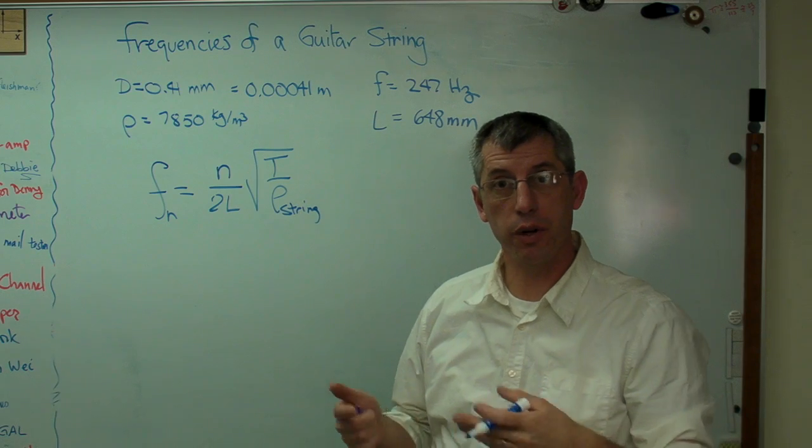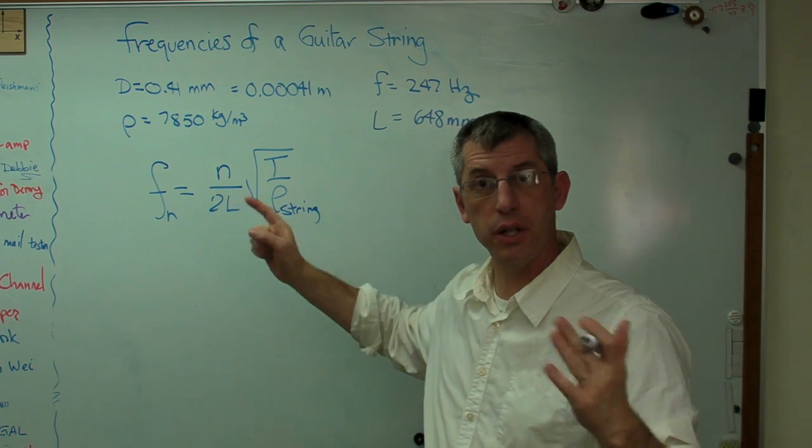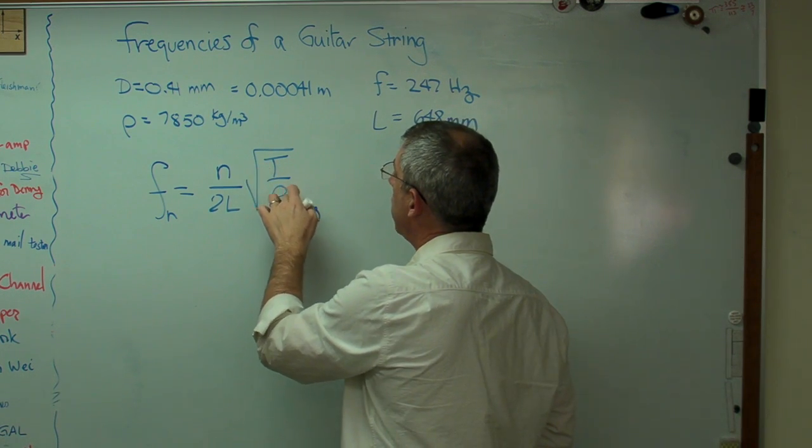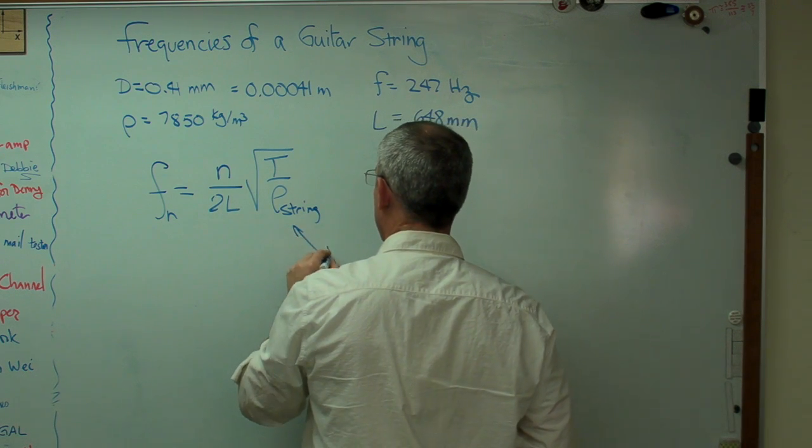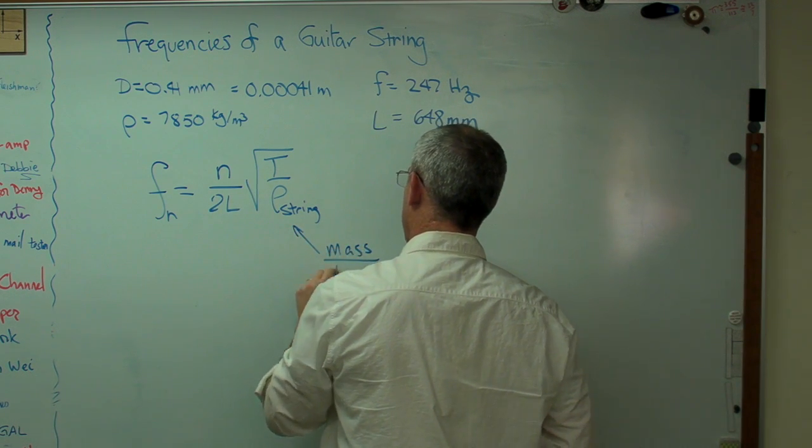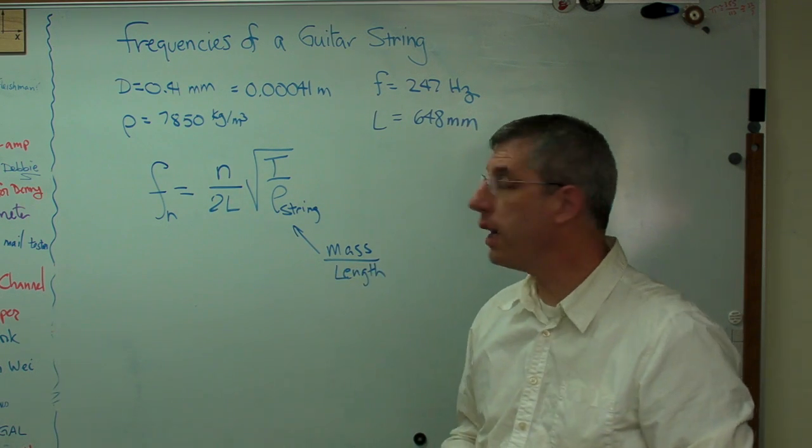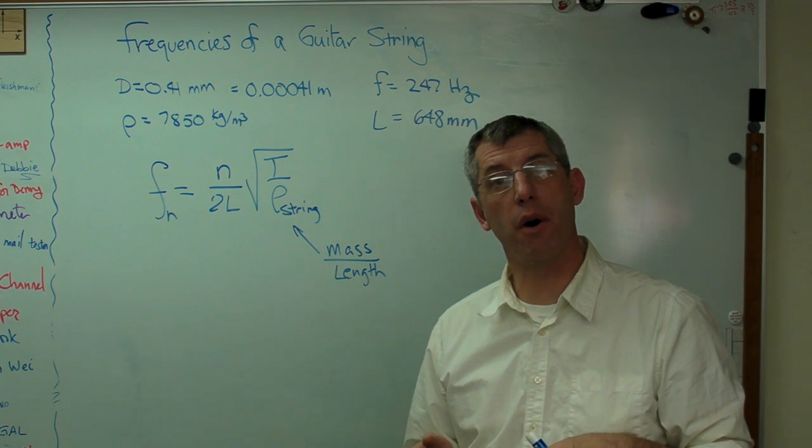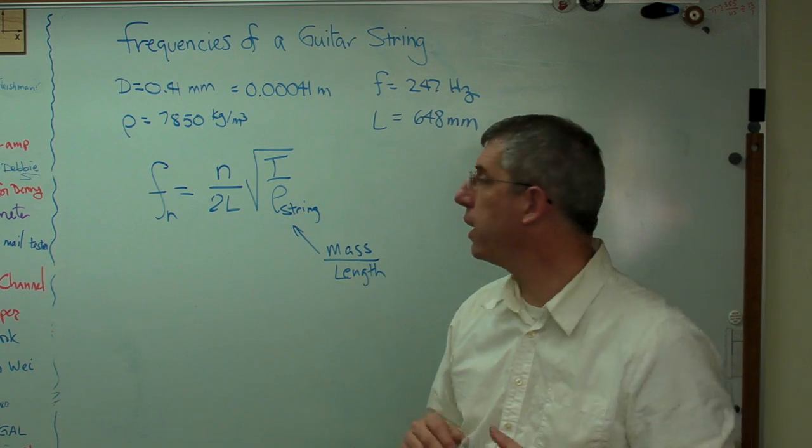There's an n. n is an integer, 1, 2, 3, 4, 5, etc. 2L is the length from the bridge to the saddle. That's called the scale length of the guitar. This is tension, and that's mass per unit length of the string. The strings we're looking at are made out of steel. Now, some of them are wound with a second wire, and some of them aren't. So right now, we're just looking at the plain wire ones. We'll worry about the windings later.